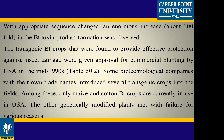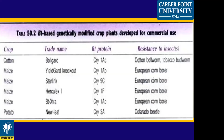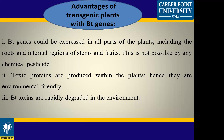Other genetically modified plants were made with failure for various reasons. Some Bt-based genetically modified crops and Bt proteins have been granted approval. The Bt protein in cotton shows resistance to insects. The advantage of transgenic plants is that the Bt toxin can be expressed in all parts of the plant, including root, internal region of the stem, and fruit — this is not possible with chemical pesticides.